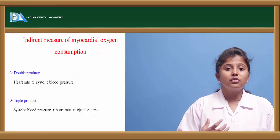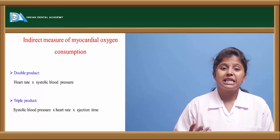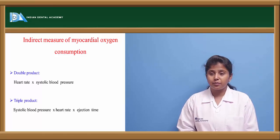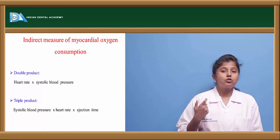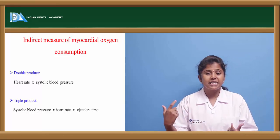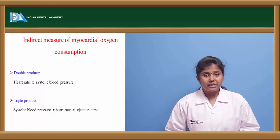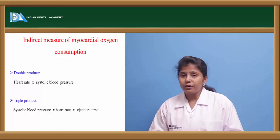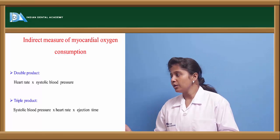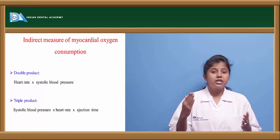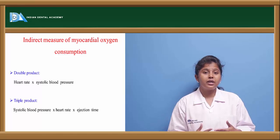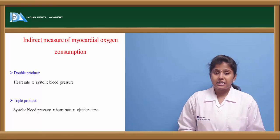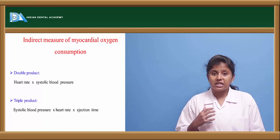The amount of oxygen required by the heart can be measured using two products. The double product is heart rate multiplied by systolic blood pressure. The triple product additionally includes ejection time — systolic blood pressure, heart rate, and ejection time are multiplied together to determine the heart's oxygen consumption.